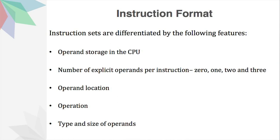Next, the number of explicit operands per instruction — that is, the operands can have 0, 1, 2, or 3 number of operands. Next, we have the operand location. Here it means whether the operands are fetched from the registers or from the memory.